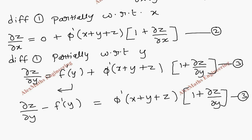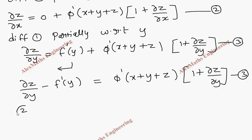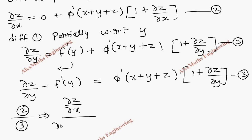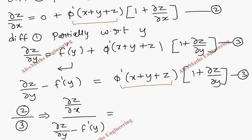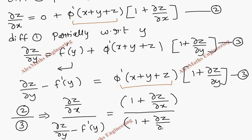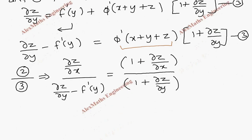Now we are going to divide the second expression by the third expression so that we can eliminate phi dash. Left hand side it is dou z by dou x divided by dou z by dou y minus f dash of y. While dividing, the phi dash term gets cancelled, and we have in the numerator 1 plus dou z by dou x and in the denominator 1 plus dou z by dou y.